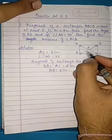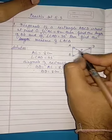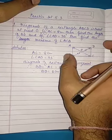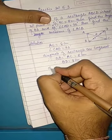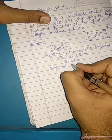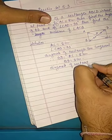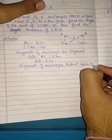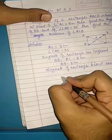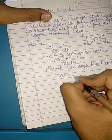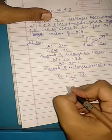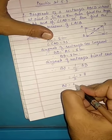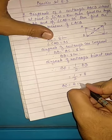Now, the question is: what is the length of BO? We know that diagonals of a rectangle bisect each other — that means they divide into two equal parts. So BO is half of BD. Since BD is 8, BO equals 4 cm.